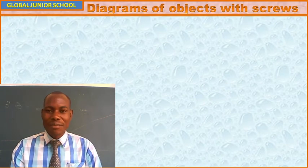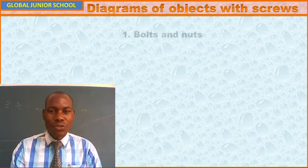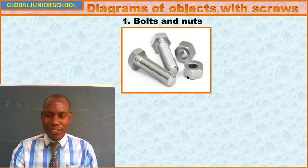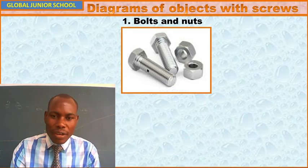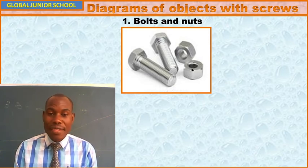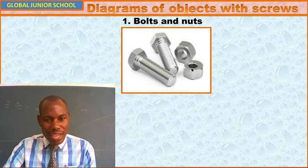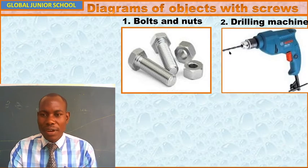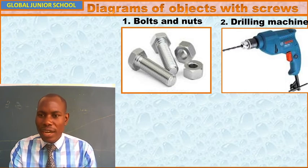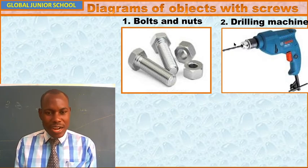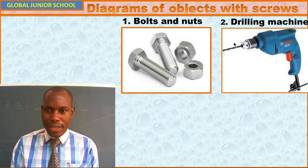Now let us look at the diagrams of some objects with screws. We have bolts and nuts — have you ever seen those? This one and this are bolts, while these two are nuts. They work together: you fix a bolt through a hole, then fasten using a nut. So bolts and nuts are screws. We also have the drilling machine. This is what a drilling machine looks like — it is a screw itself. You press here and this part rotates, and that screw rotation enables it to drill a hole through wood or through the wall of a building.